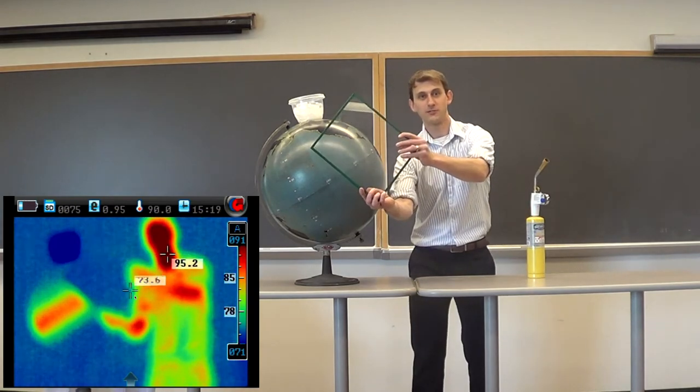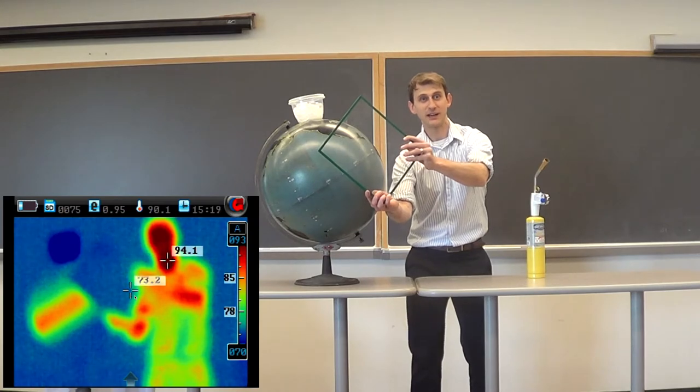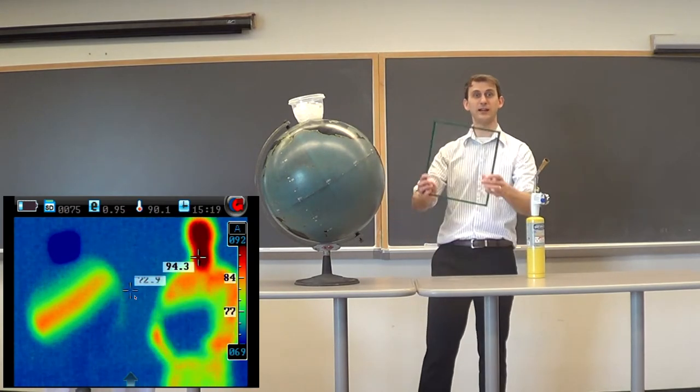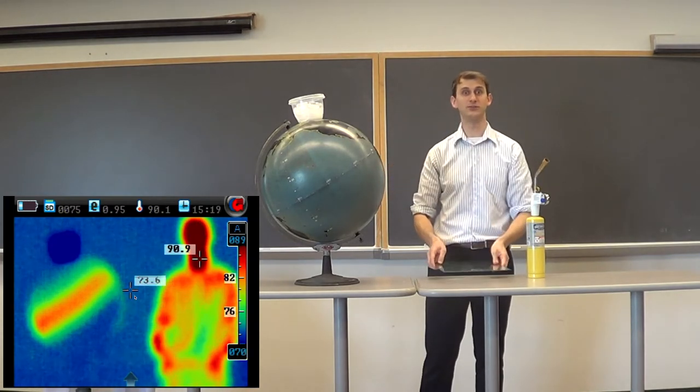So in front of our model planet, we're reflecting that light back down. Just like a greenhouse lets in visible light, it's heated, and the long wavelengths have trouble escaping.